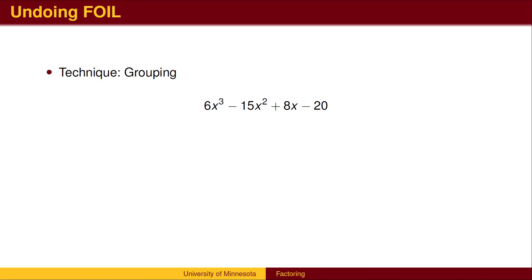We break the problem into two halves. First, look for a common factor among the first two terms. In this case, both 6x cubed and 15x squared have a factor of 3x squared. We factor the 3x squared out of the first two terms. We find that the remaining factor is 2x minus 5.